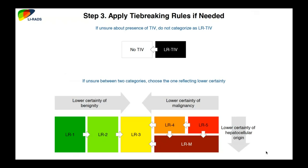As Dr. Cherniak mentioned, when you're not sure about a finding, go to the area of less certainty. If you're not sure you see a capsule, go down one category. If you're not 100% sure about arterial enhancement, use the column without arterial enhancement. This is important because HCC is one of the few cancers where we can send a patient to surgery or transplant without a definitive biopsy, so it's critical that as radiologists we are very specific with LIRADS 5 findings.